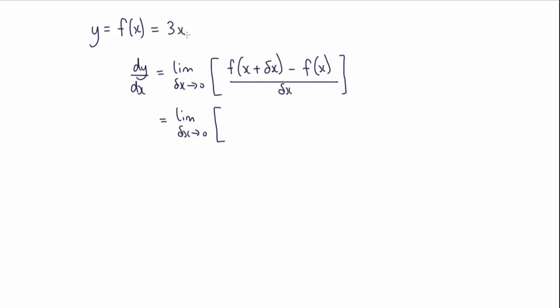we've got a 3x here. Wherever we see an x, we replace it with x plus delta x. So I'll have 3 times x plus delta x minus the original function, which is 3x. And that's all over delta x.